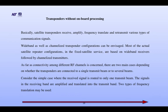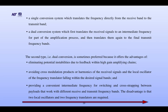Followed by channelized transmitters. As far as connectivity among different RF channels is concerned, there are two main cases depending on whether the transponders are connecting to a single transmit beam or to several beams. The signals in the receiving band are amplified and translated into the transmit band. Two types of frequency translation may be used: a single conversion system, which translates the frequency directly from the received band to the transmit band, and a dual conversion system, which translates the received signal to an intermediate frequency for part of the amplification process.